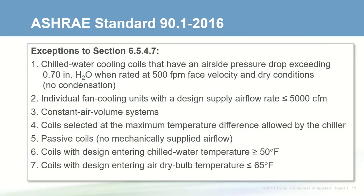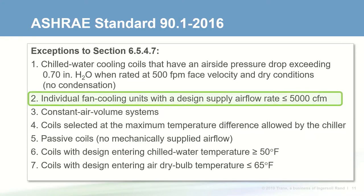While this is now a prescriptive requirement, like other sections of the standard, there are several exceptions. For example, individual fan cooling units that supply 5000 CFM or less are exempt — this includes fan coils, blower coils, classroom unit ventilators, and small air handlers. The committee included this exception because most small fan coils don't have an option for an 8-row coil. But as we'll see, an 8-row coil is not necessarily needed, so it's still a good idea to select even smaller units with a higher delta T.